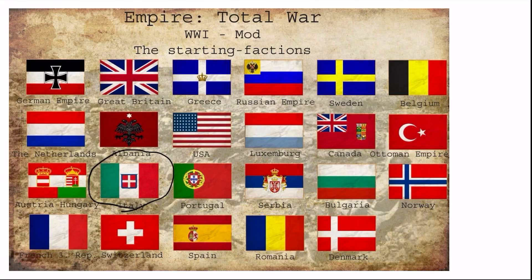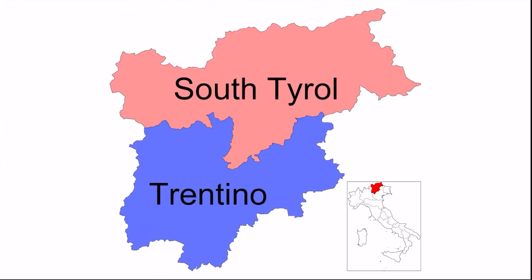Italy would fight alongside the Allied powers in the war, and thus got a nice piece of Austria after the war — most of which would be South Tyrol and Trieste. They also did get some more territories that they would eventually lose after the Second World War.